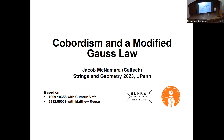I'm going to be telling you about cobordism and a modified Gauss law. My talk is based on two papers. The first one is my paper from 2019 with Kamran Vafa — the paper where we introduced what's become known as the swampland cobordism conjecture, which I'm going to review. But more specifically, the phenomenon I'd like to tell you about came up in a paper with Matt Reiss from the fall, which was actually phenomenologically motivated. In thinking about it more carefully, we ran into this modified Gauss law, and that's what I want to tell you about.